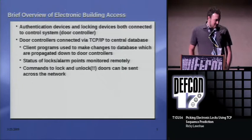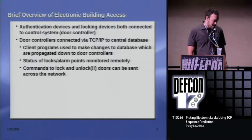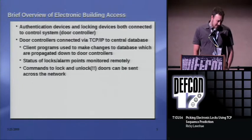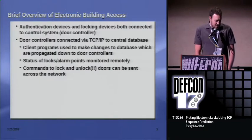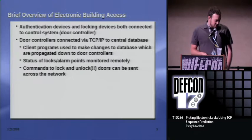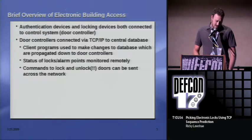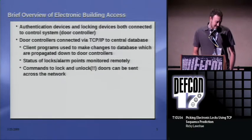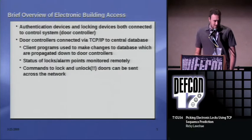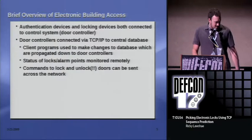A brief overview of electronic building access: you've got your authentication device, which is your reader, and then you've got your locking device. Both of those are connected to a door controller, which is then connected to the network. Client programs can send remote commands to these — specifically locking and unlocking commands — and they also monitor the state of the door and alarm points.